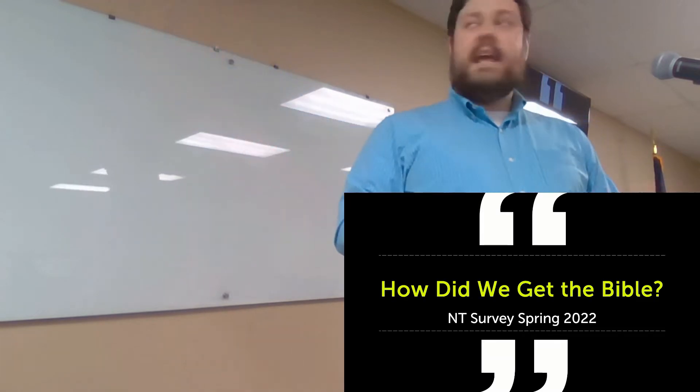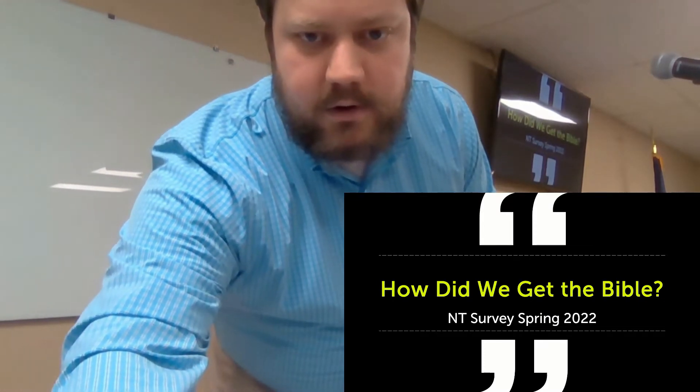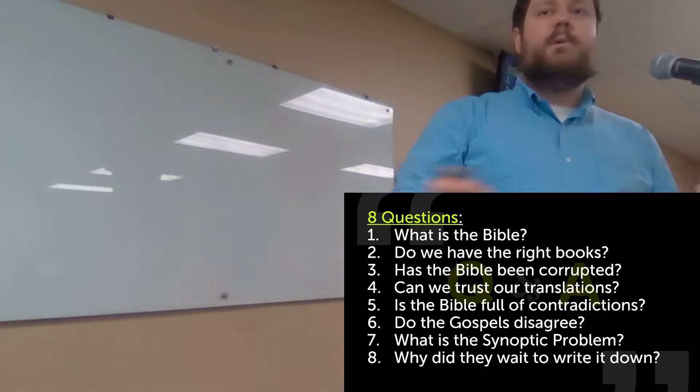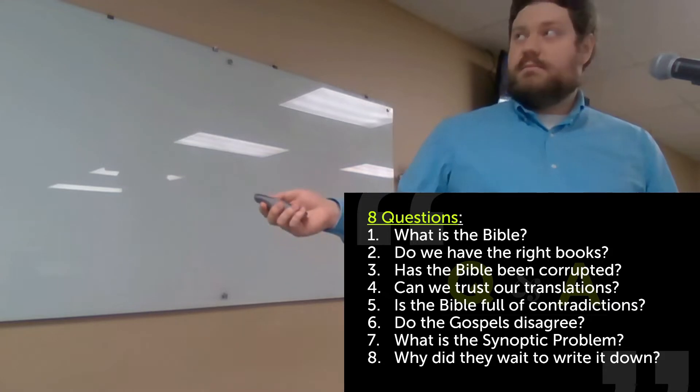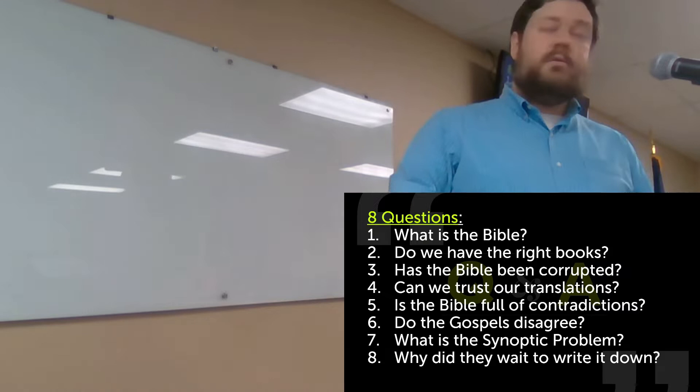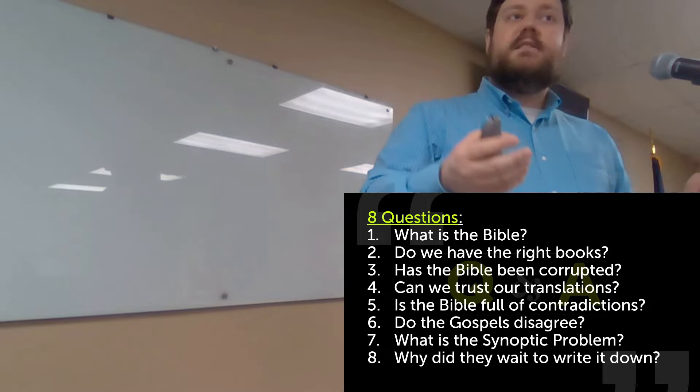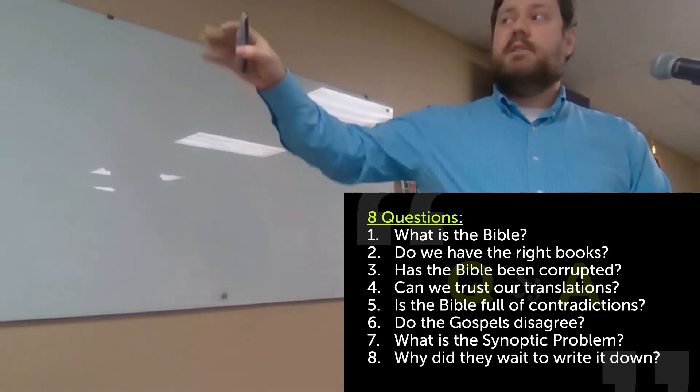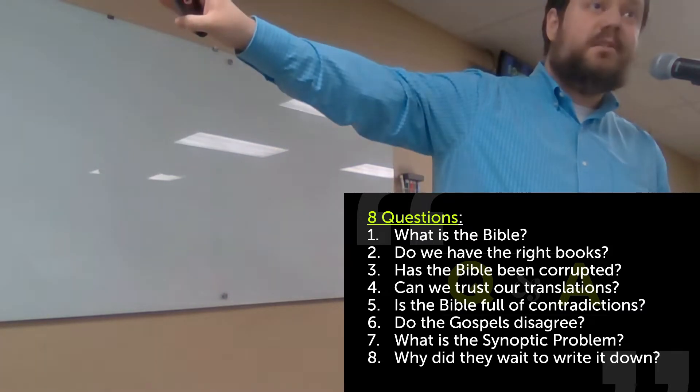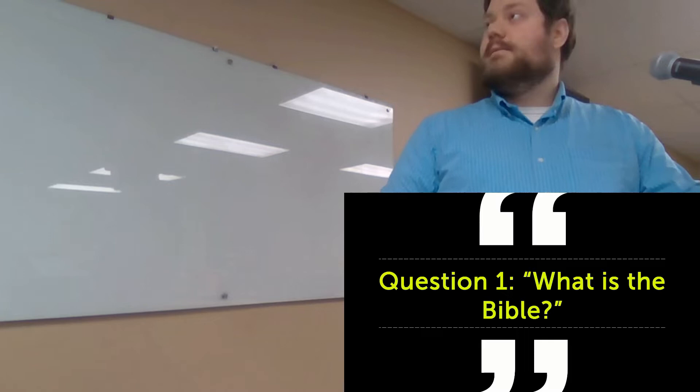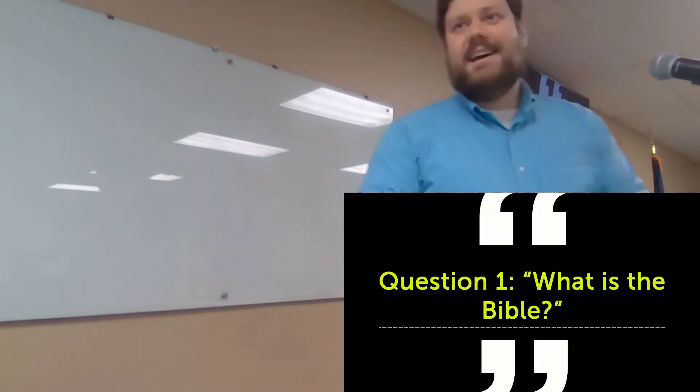The first thing we're going to go through is a series of eight questions. These are the eight questions we're going to take a look at. Maybe we'll get to them all today, maybe we won't. What is the Bible? Do we have the right books? Has the Bible been corrupted? Can we trust our translations? Is the Bible full of contradictions? Do the Gospels disagree? What is the synoptic problem? And why did they wait to write it down? A lot of these came from the questions that we did in our summer series with the youth.